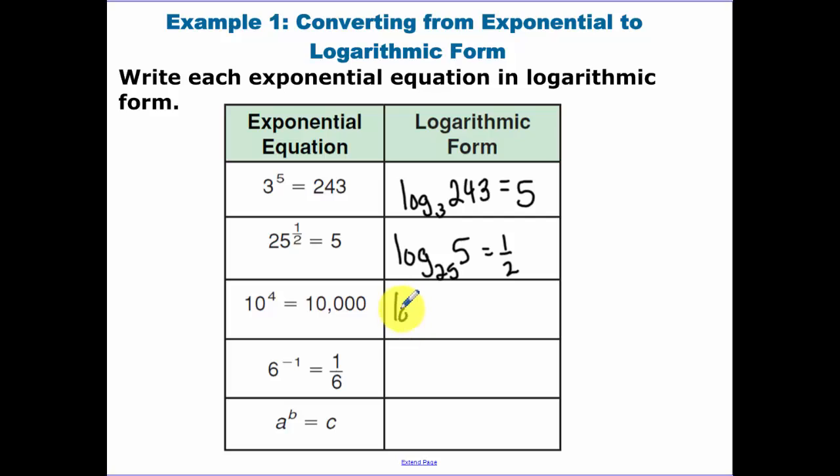Next, we have log base 10. When you have a logarithm that's base 10, that's called a common logarithm, so I don't need to write the base down. Log base 10 of 10,000 equals 4. So 10 to the fourth power is going to equal this 10,000 that we see in there. Log base 6 of 1 sixth equals negative 1. 6 to what power gets me 1 sixth? And lastly, we have log base A of C is equal to B.